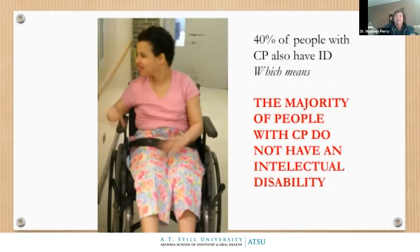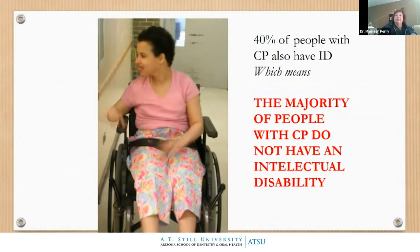Only 40% of people with CP also have intellectual disability, which means the majority do not. This is a key takeaway: when you meet someone with cerebral palsy, do not assume they have an intellectual disability, because most people do not.